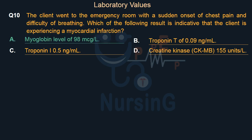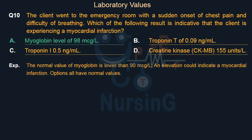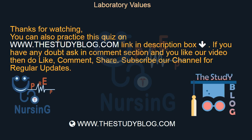The right answer is Option A: Myoglobin level of 98 micrograms/L. The normal value of myoglobin is lower than 90 micrograms/L. An elevation could indicate a myocardial infarction. All other options have normal values.